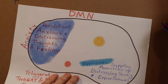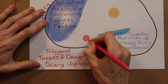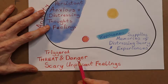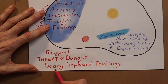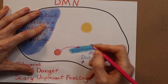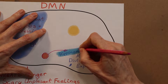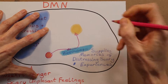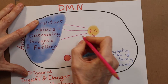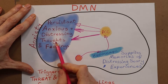To give you that in a more descriptive way, it looks like this. The amygdala becomes triggered — often inappropriately — by the perception of threat and danger, creating scary, unpleasant feelings. It then checks the hippocampus, which unfortunately supplies memories of distressing and scary experiences, and all of this gets passed into the posterior cingulate cortex, which throws it forward so that your cortex is now being bombarded excessively with persistent anxious, distressing thoughts and feelings.